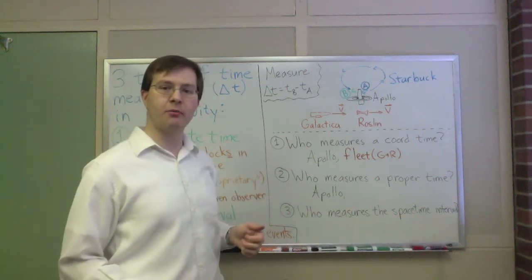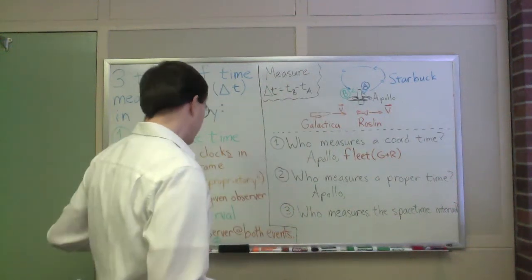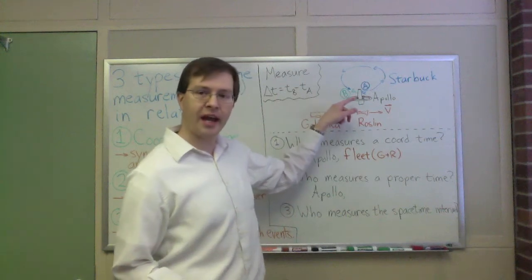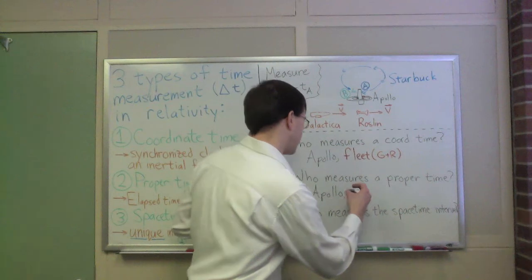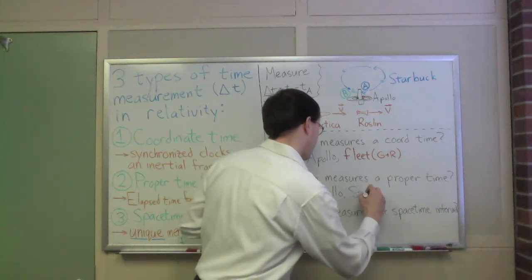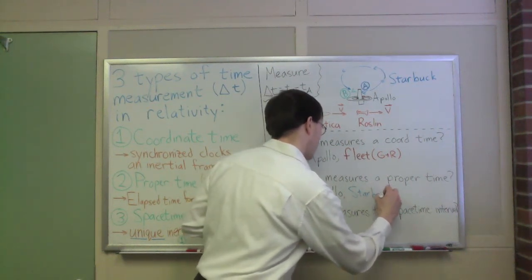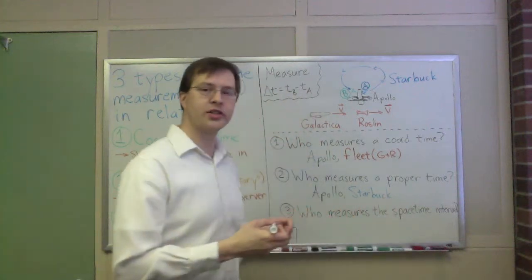The other person who can measure a proper time between the two events is Starbuck, because Starbuck is there for event A, she's on the Viper that leaves, and she's there for event B, because she gets back at that moment. So, Starbuck also measures a proper time.